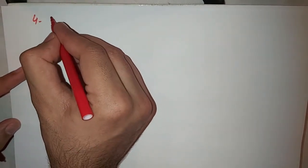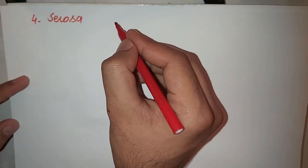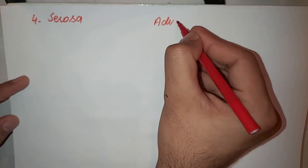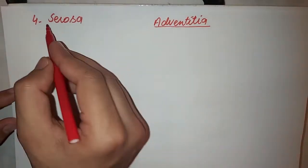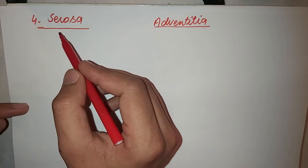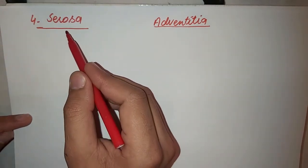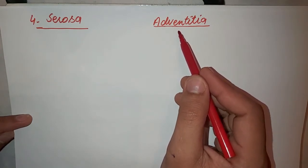Now we will discuss the fourth layer of the digestive tract. The fourth layer is serosa, or in certain places adventitia is also present. Serosa is present in some places and adventitia is present at others — we will discuss both of these here.